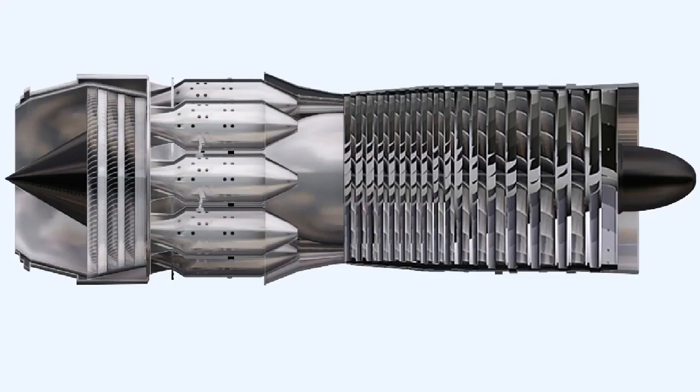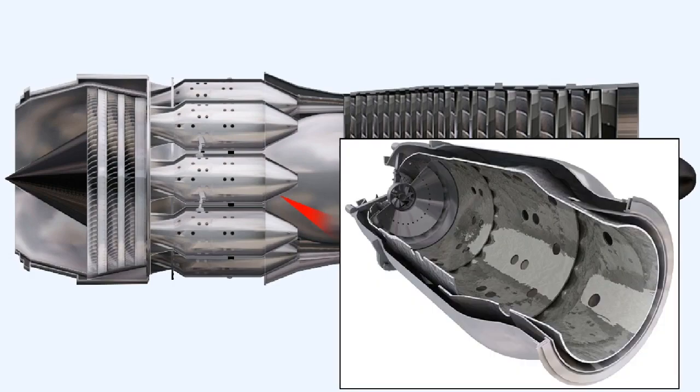Two means of getting rid of the fuel are open to us. First, the fuel drain system, and second, a method of evaporating the remaining traces of fuel from the combustion chambers, the turbine, and the jet pipe.